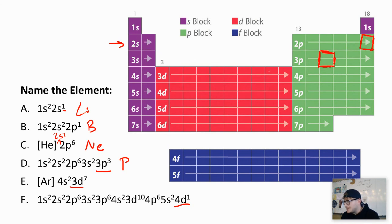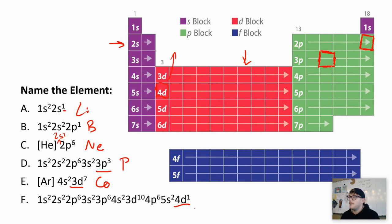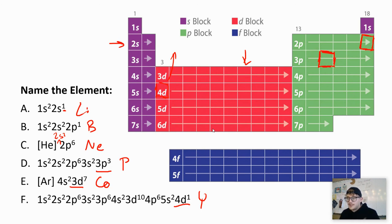For 3d7, here's my 3d row — count seven over: that's cobalt. For 4d1, it's going to be the first block of the 4d row — that would be yttrium. Instead of counting all electrons, you can memorize the patterns on this chart and visually know where each orbital is. This is fair game — if you want to write the s block, d block, p block, and f block labels on your periodic table for class, go ahead. You just need to know how to interpret electron configurations to find your answer.